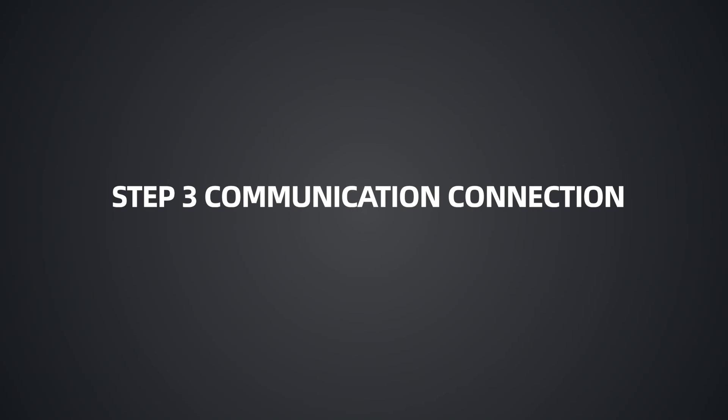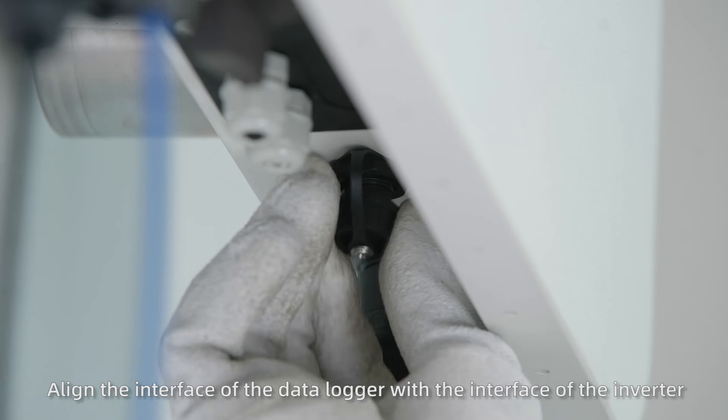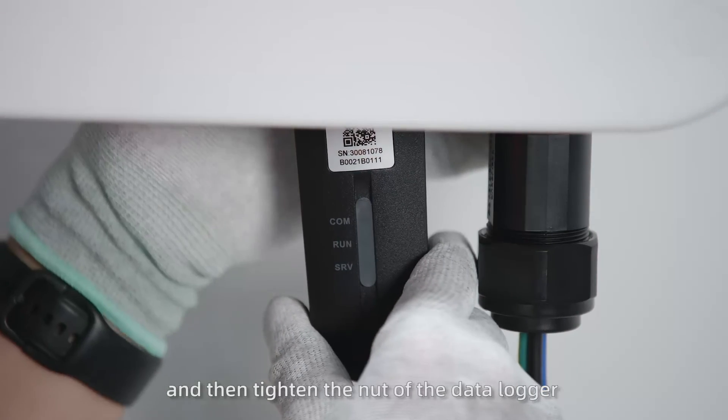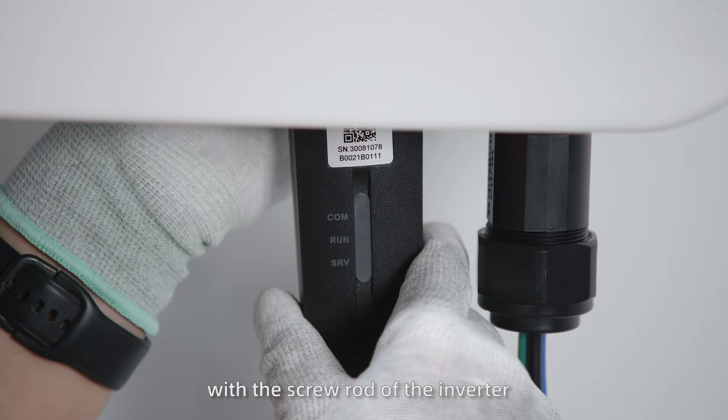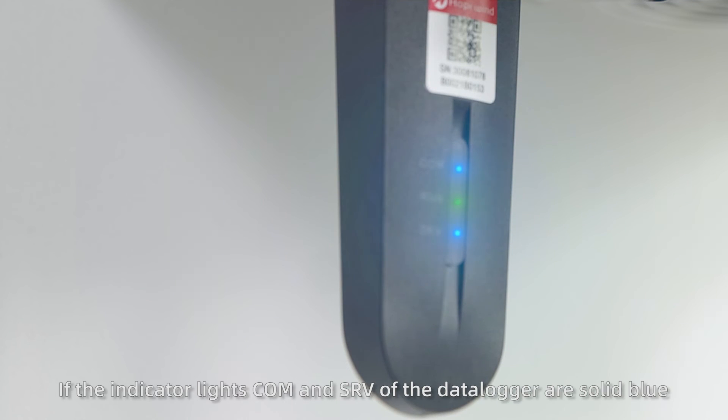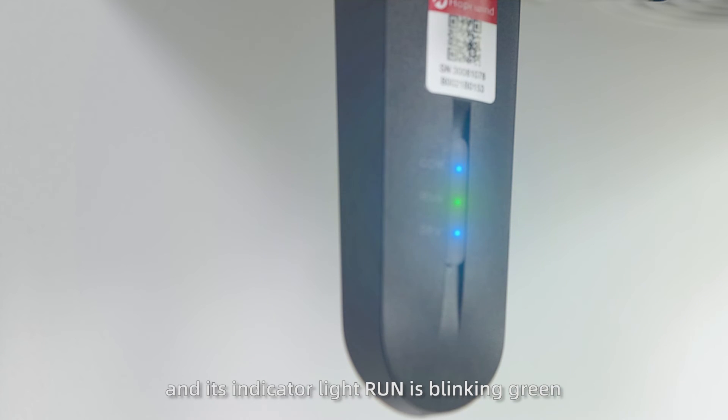Step 3 Communication Connection. Align the interface of the data logger with the interface of the inverter, insert it tightly, and then tighten the nut of the data logger with the screw rod of the inverter. When the inverter starts up, if the indicator lights COM and SRV are solid blue, and the run light is blinking green, the data logger is in normal operation.